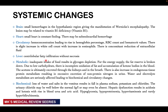Systemic manifestations include brain involvement, with small hemorrhages in the hypothalamic region giving rise to Wernicke's encephalopathy — related to vitamin B1 deficiency. The heart may be small, and there may be subendocardial hemorrhage. In the circulatory system, there is hemoconcentration with a false rise in hemoglobin percentage, RBC, and hematocrit values, a slight increase in white cell count, an increase in eosinophil count, and a concomitant reduction of extracellular fluid.